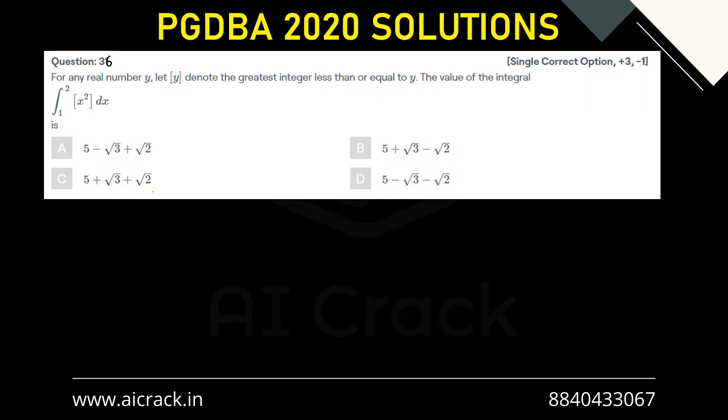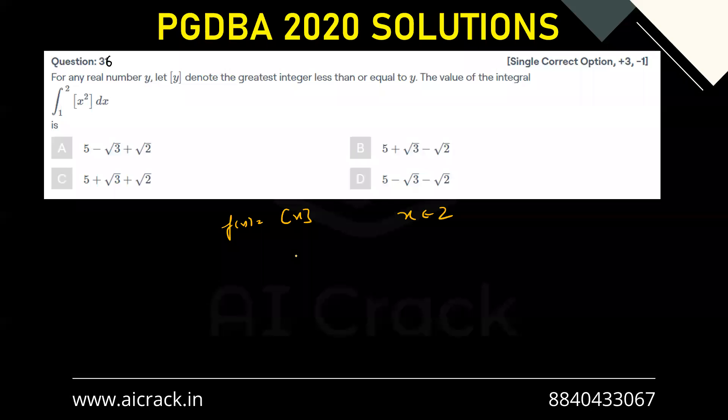So we know that if f(x) equals the gif function of x, then this function is discontinuous when x belongs to integers. Now we have the function [x²], so this function would become discontinuous when x² belongs to integers.